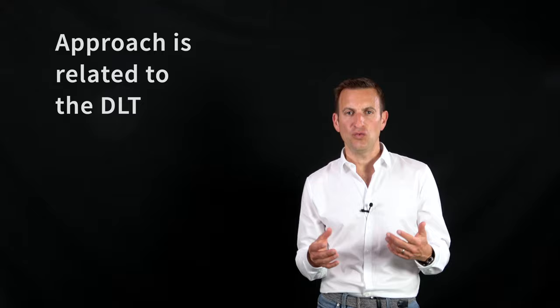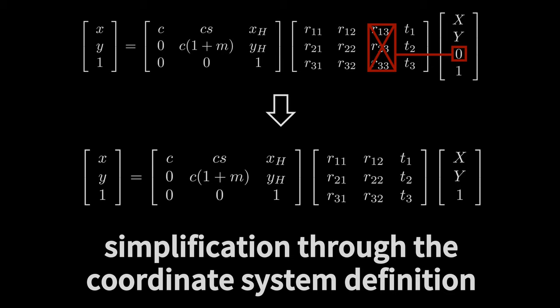The approach how that works, how I can actually estimate the calibration matrix K, is quite similar to the approach of the direct linear transform. What we are doing additionally here is we are exploiting that the points that we are picturing on the checkerboard all have a z coordinate, which is zero.